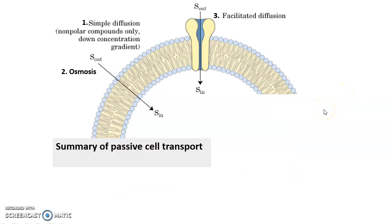Passive cell transport. We have simple diffusion, high concentration to low, no energy. Osmosis is water, high concentration to low, no energy needed. Facilitated diffusion, you need something to allow the diffusion to occur, but then after that it is still high concentration to low, no energy needed.